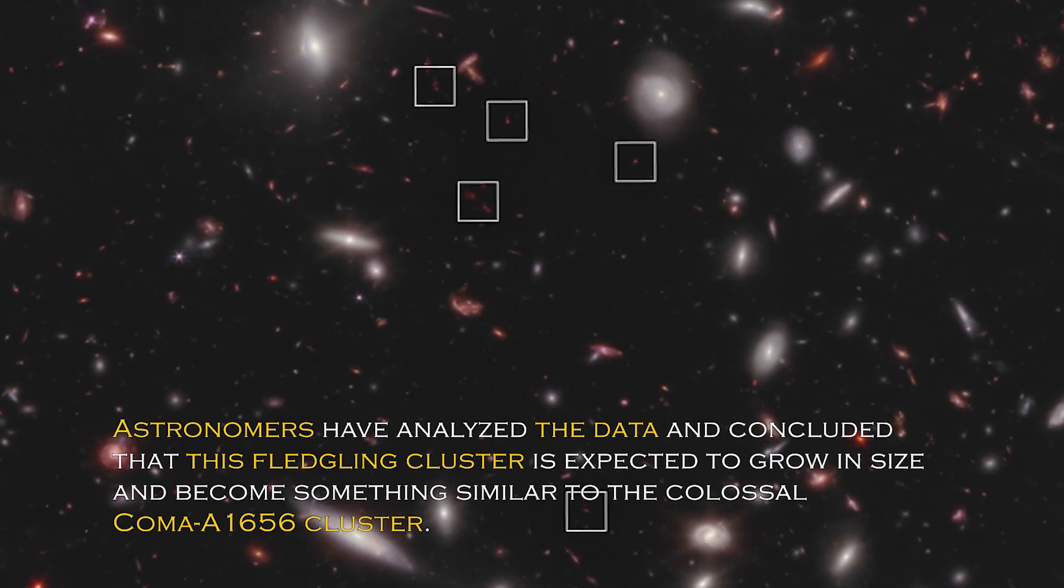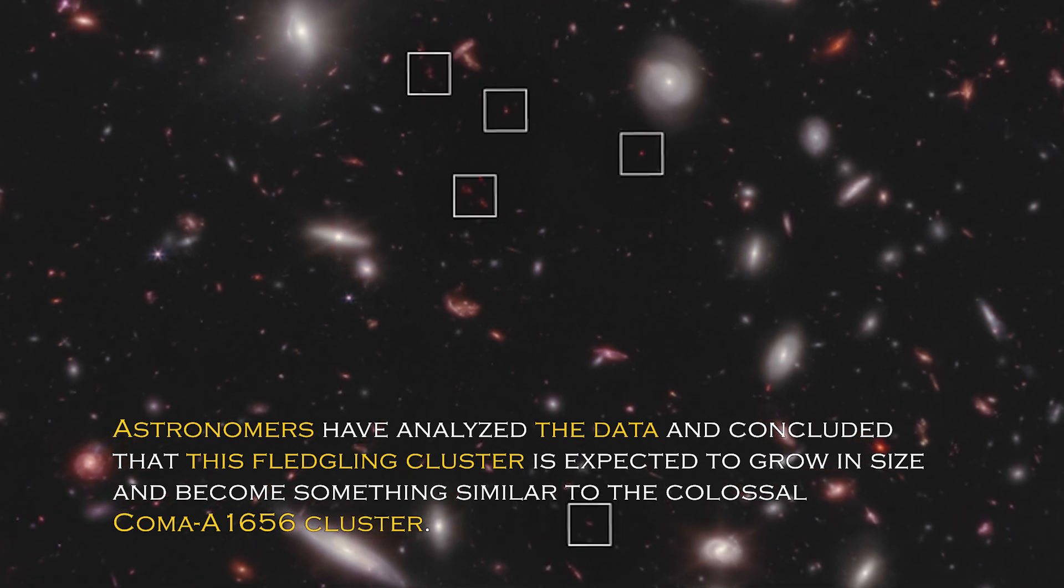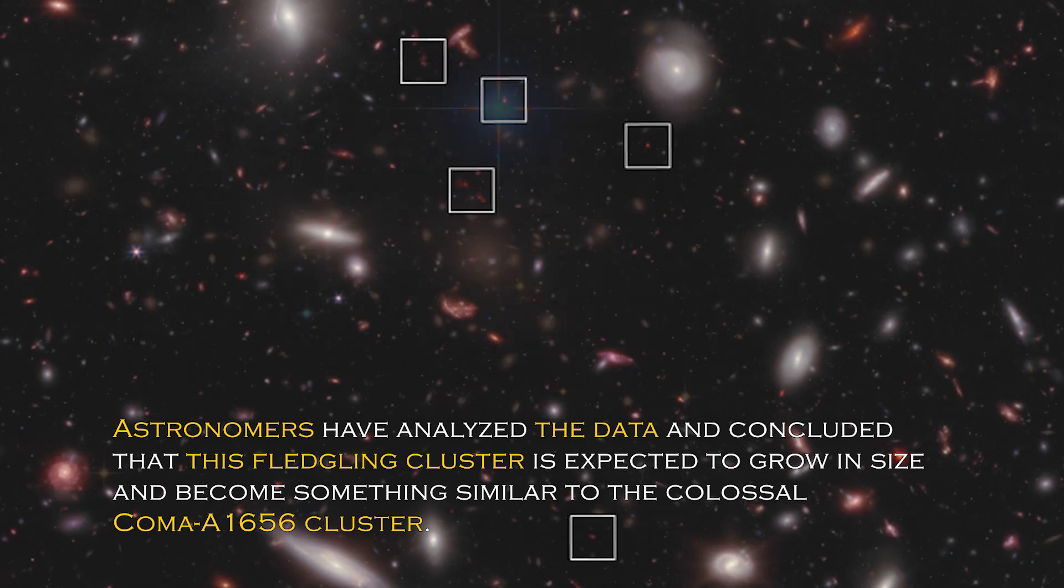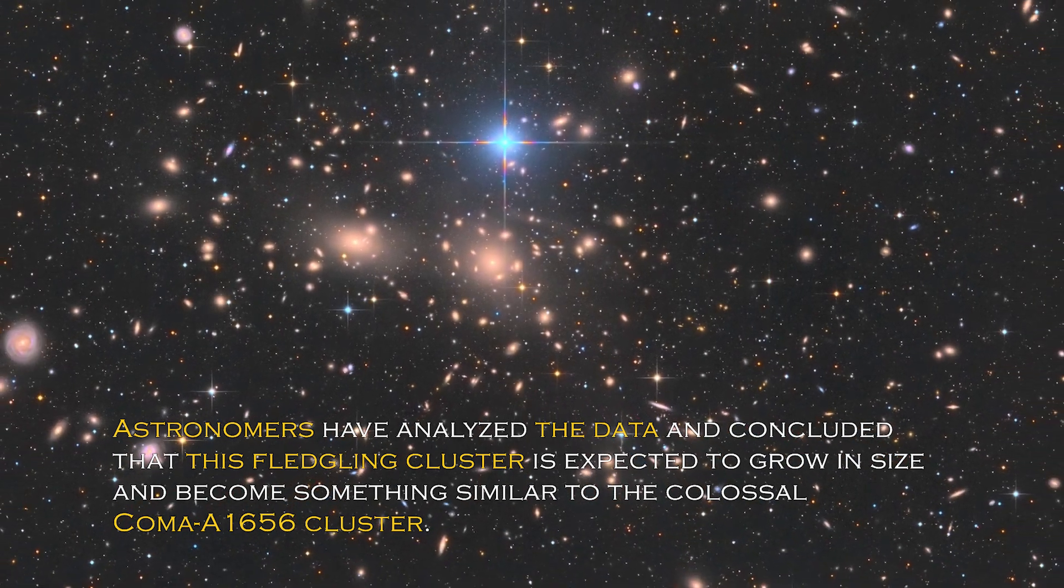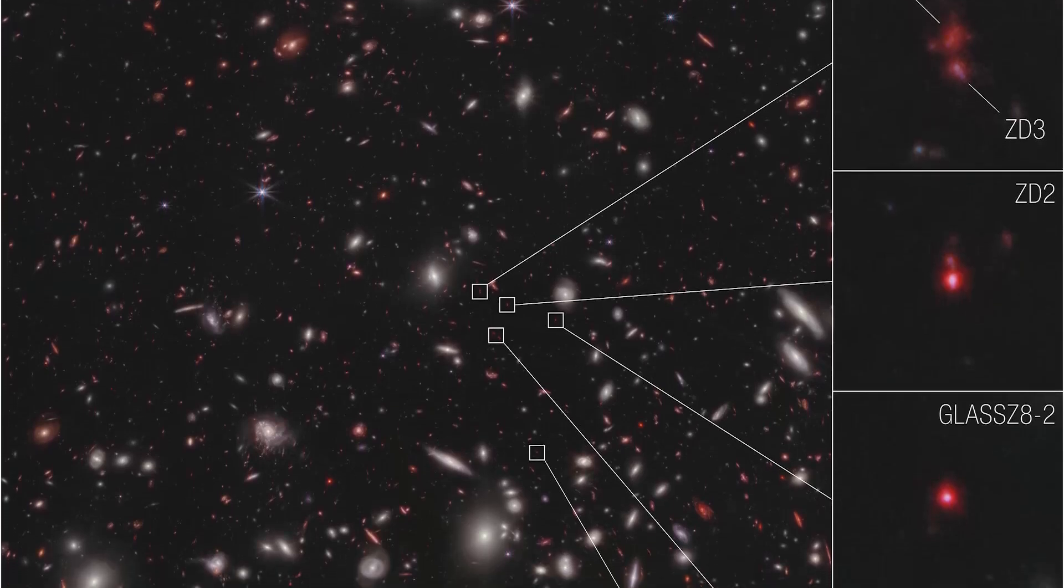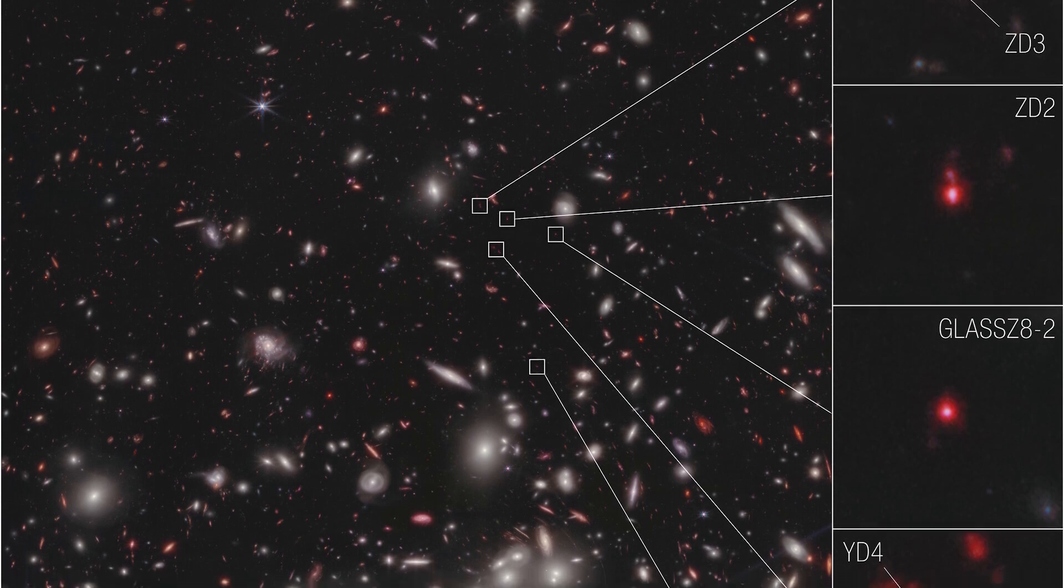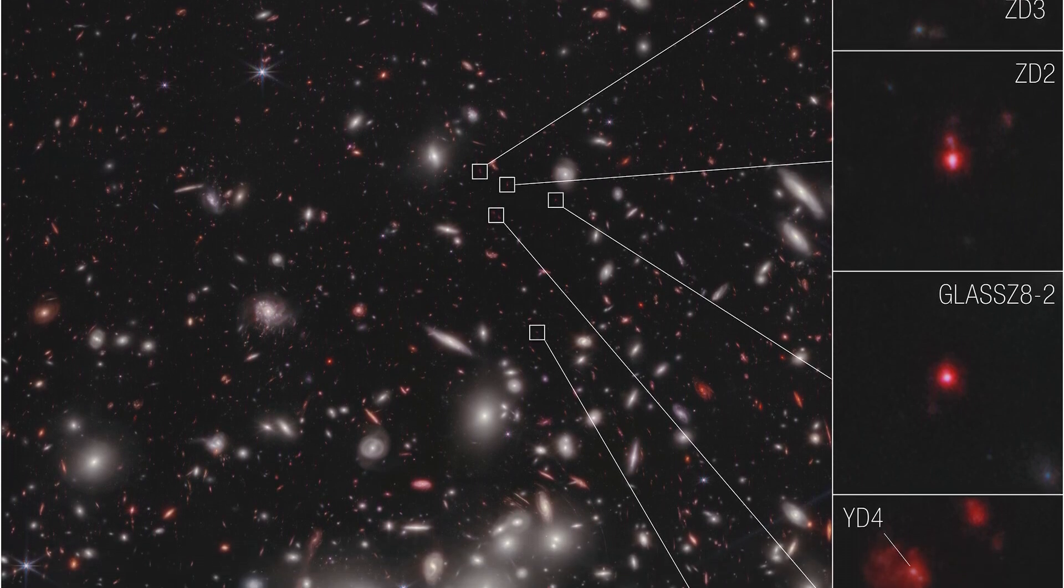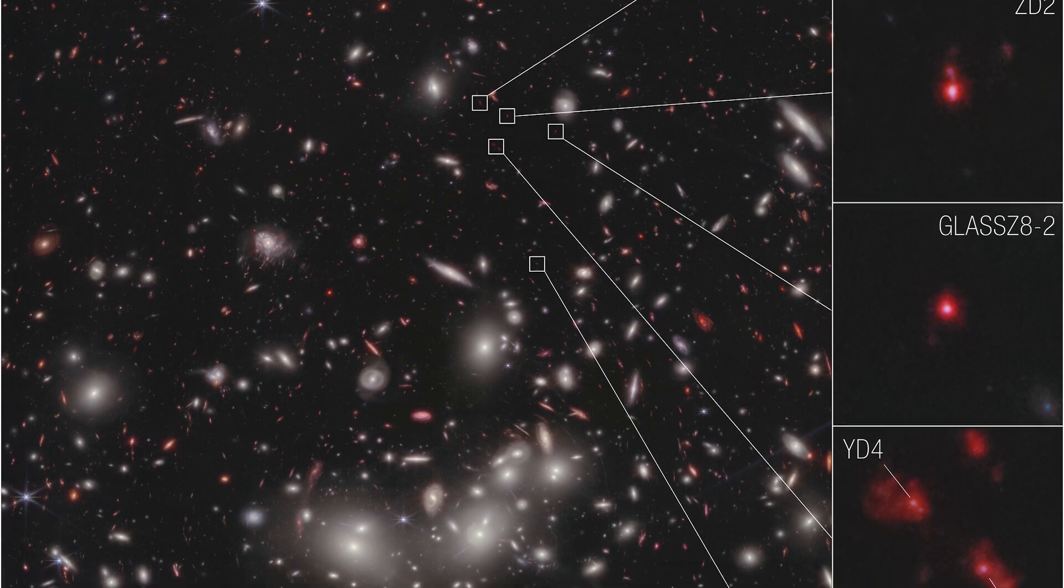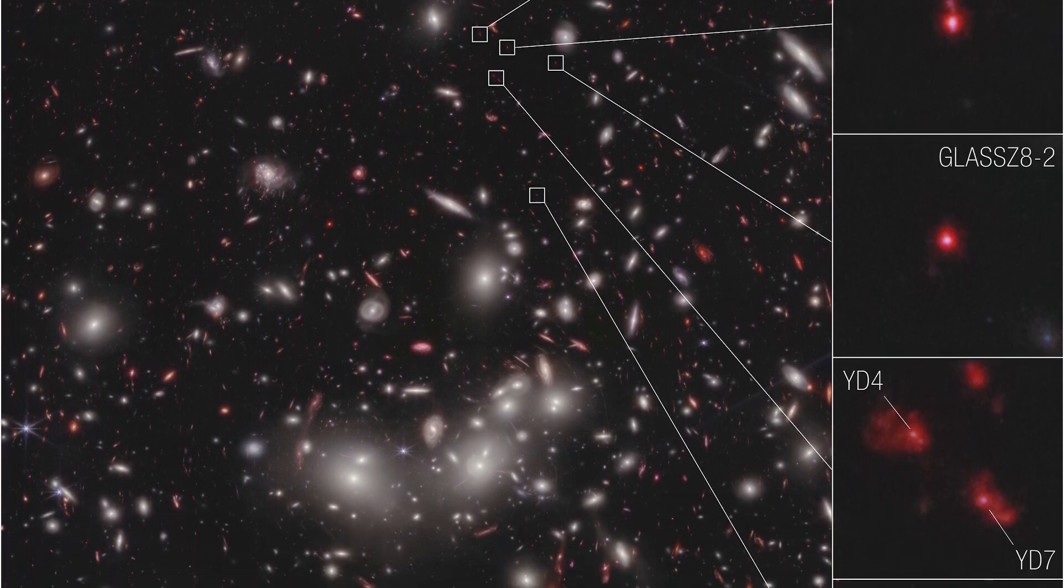Astronomers have analyzed the data and concluded that this fledgling cluster is expected to grow in size and become something similar to the colossal Coma A1656 cluster. The place where all this is taking place is unique and special, as it is in an area of accelerating galactic evolution thanks to the James Webb Space Telescope. Now researchers can measure the velocities of these seven galaxies, which gives them the confidence to confirm that they are bound together in a protocluster.